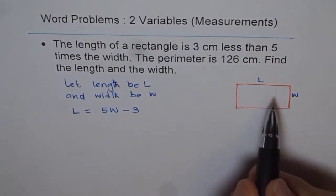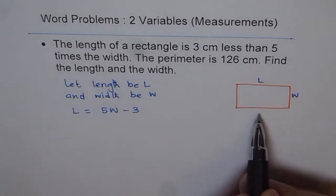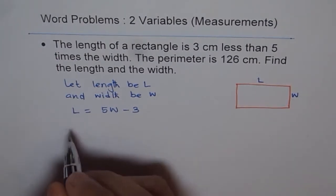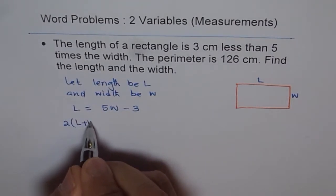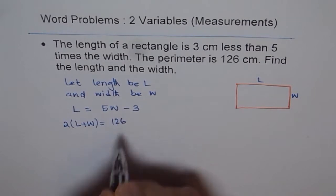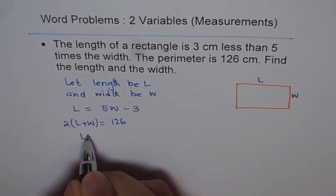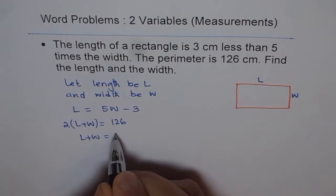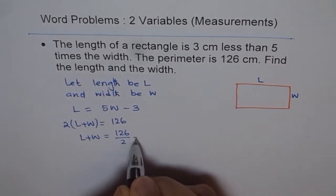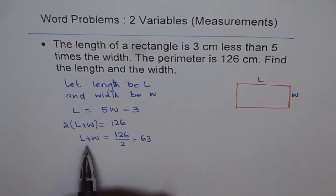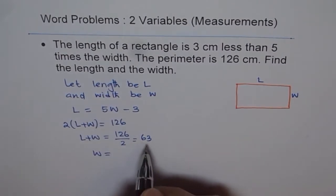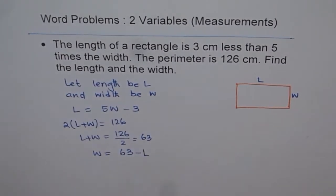cm. Perimeter means sum of all 4 sides. That means 2L plus 2W is 126. So we get 2 times L plus width equals to 126, which we can simplify as L plus width is 126 divided by 2. That gives us 63. Now what we can do here is we can write W in terms of L from this equation. So W equals to 63 minus L. And we'll write this as our equation number 2.